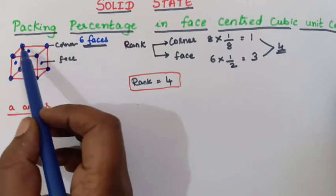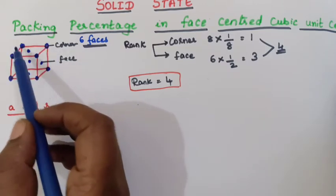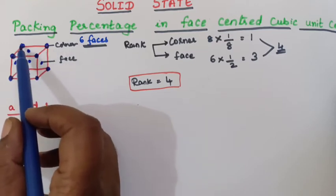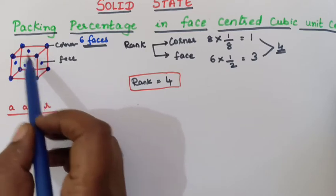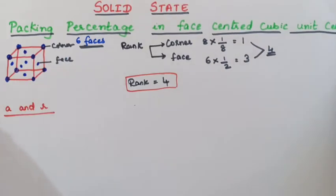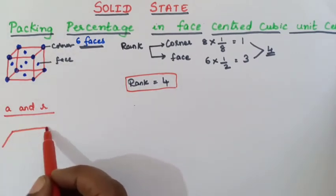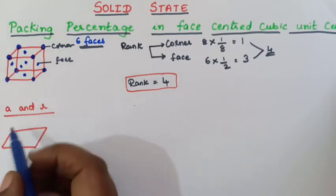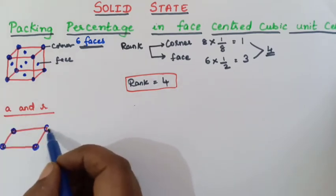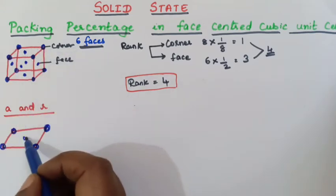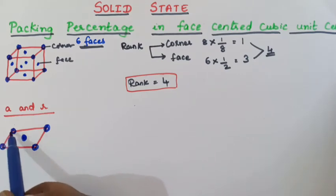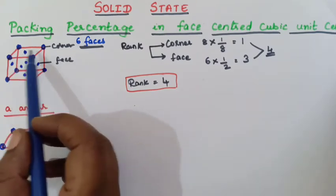So let us consider only the top most face. In that face you can see 4 corner particles and one particle present at the face center. Now these 3 atoms — the corner and face-center particles — are actually touching each other. They are not far away; only for convenient purpose we are drawing them far away. So draw them bigger so that they touch each other.